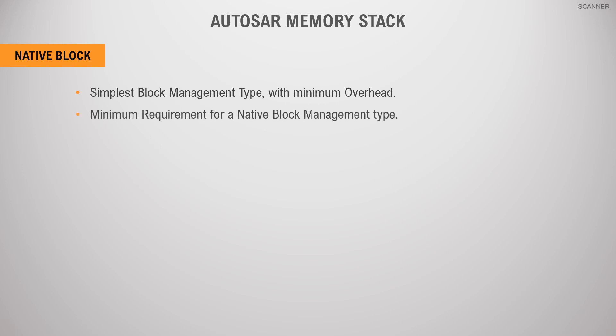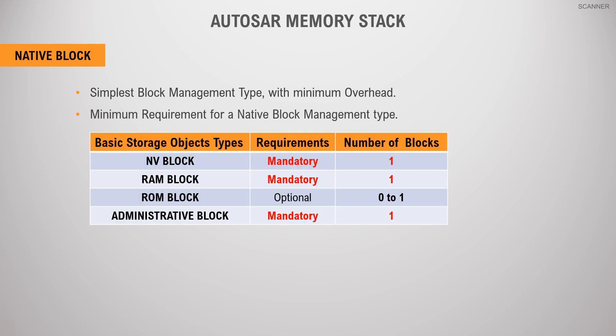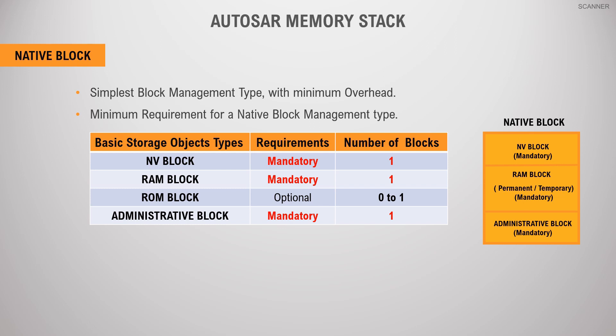When we configure a memory block with block management type as native, then it must have one NV block, one RAM block, one administration block, and an optional ROM block.